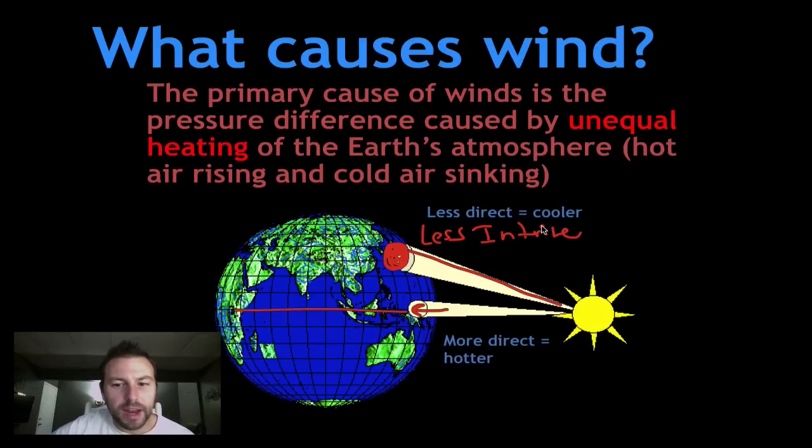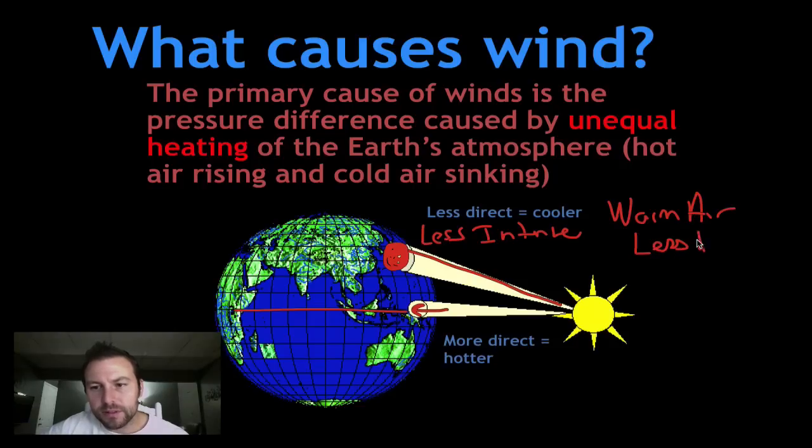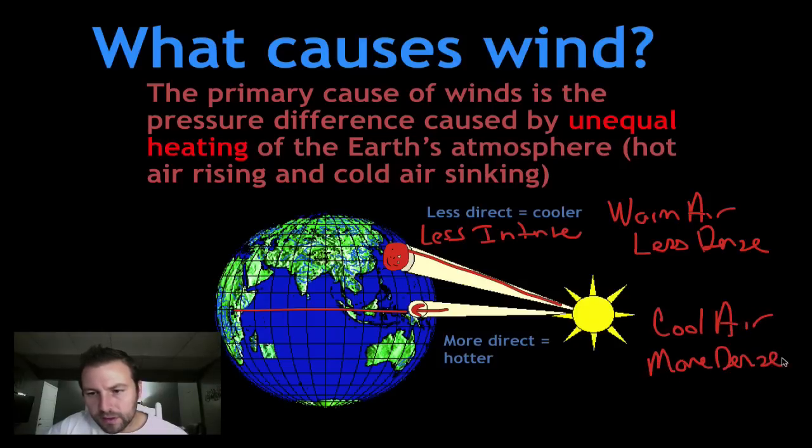What happens to air that is warm or cool? Remember, warm air is less dense. Cool air is more dense. So what ends up happening is we get a difference in density, and the difference in density is going to lead into a difference of pressure, a difference in air pressure.